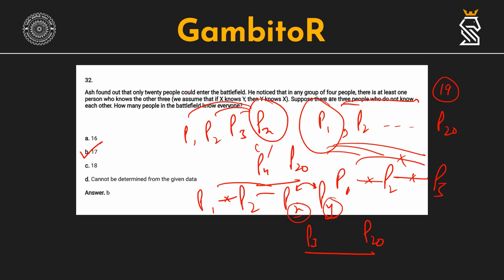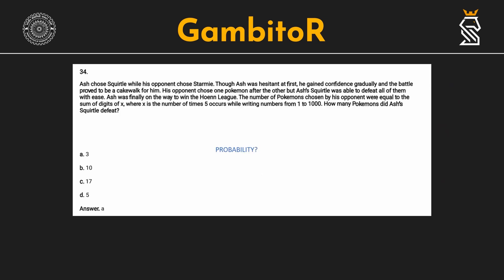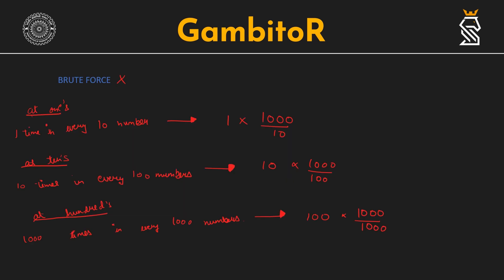Moving on to the next question, question number 34. We have to calculate the number of times 5 occurs while writing the numbers from 1 to 1000 and we have to report the sum of digits of the calculated number. How are we going to do so? One way is always brute force, you can apply some mathematics and see some sequences. One smarter way is to see from probability or observation.